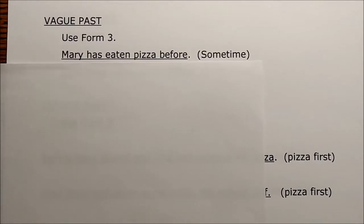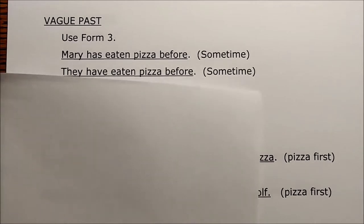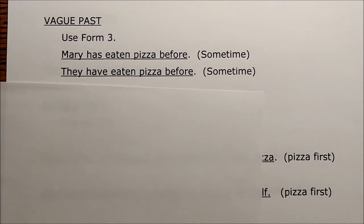The next verb tense is called the vague past tense. In this case we're talking about an action in the past, but the time it happened is not important. We use Form Three of the verb — for 'to eat,' that's 'eaten.' For example: 'Mary has eaten pizza before' — the whole idea is sometime before; the time is vague. Another example using a plural subject: 'They have eaten pizza before' — again, sometime in the past, time is not specific.